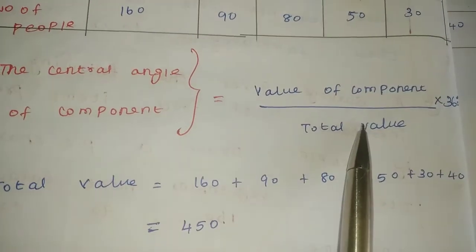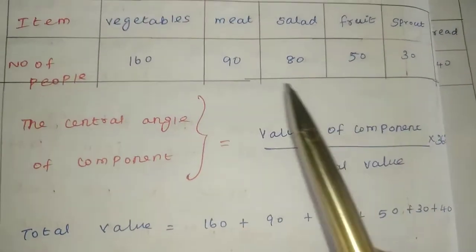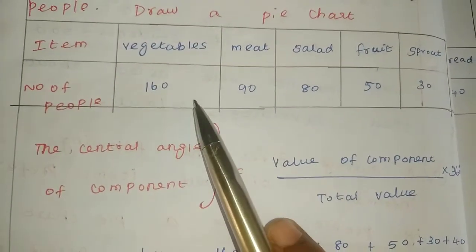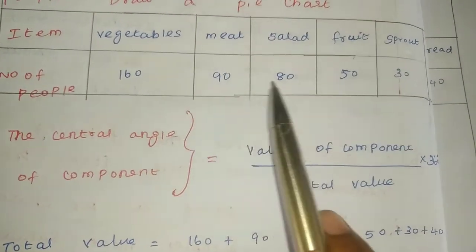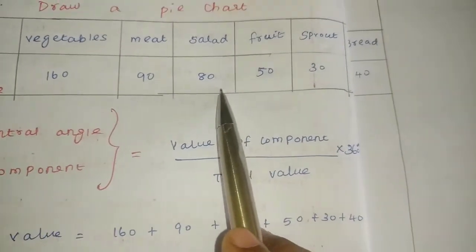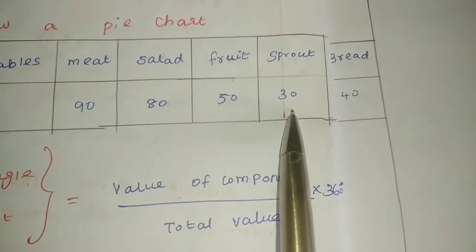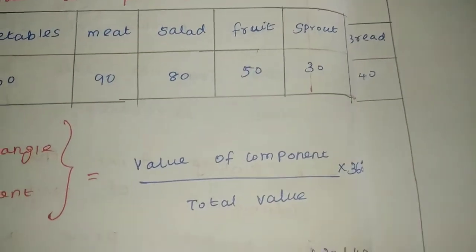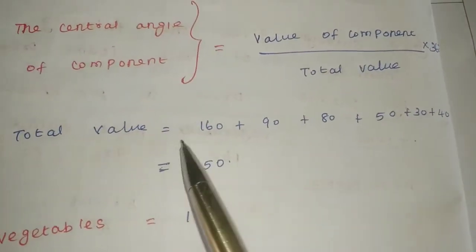First step: calculate the total value. Total value is 160 + 90 + 80 + 50 + 30 + 40. We need to add all these values together.